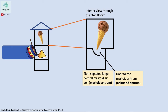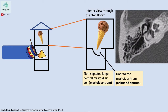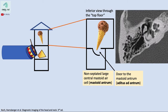Looking at an actual image through the top floor of our building: can you locate the ice cream and the cone? Here is the ice cream, here is the cone. The apex of the cone points to the door — the aditus ad antrum — which opens up to the mastoid antrum.